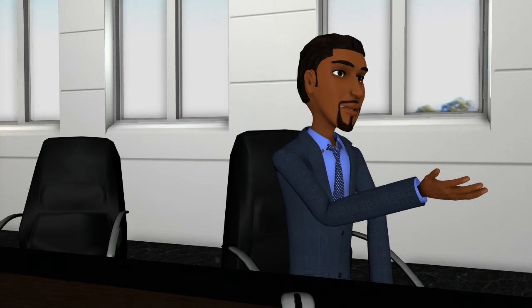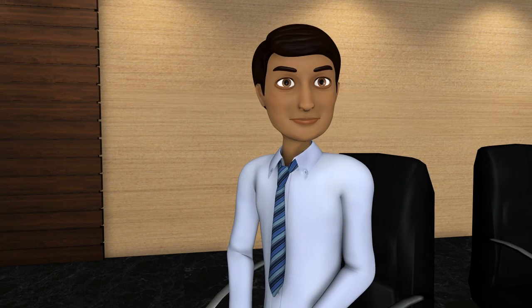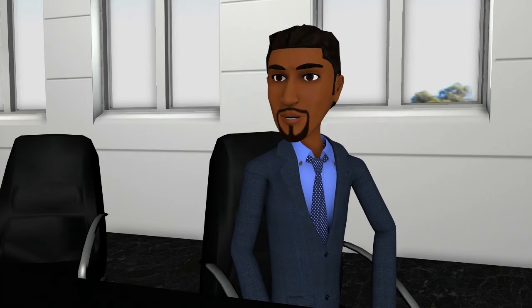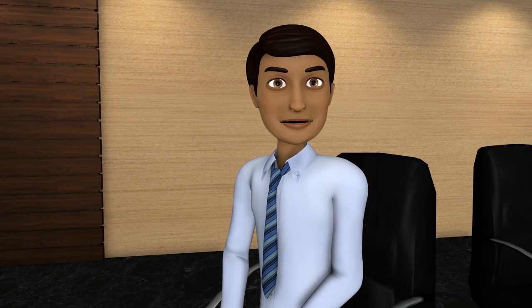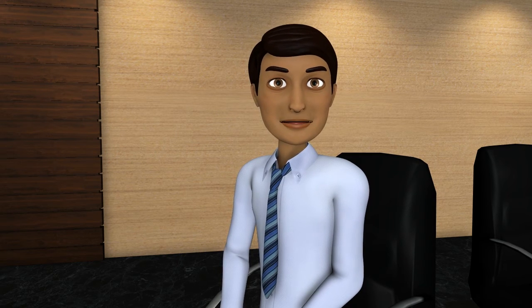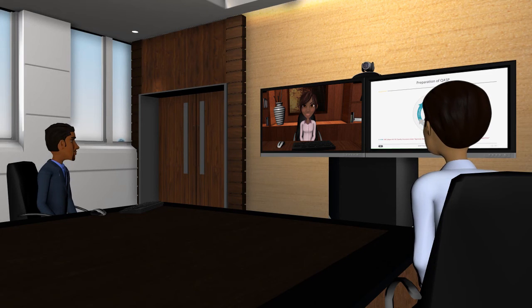Using the example Beverly gave, fuel tanker inspections — you may want to perform your own independent inspection after the contractor has performed their inspection. This will be known as a direct observation. The level of surveillance described in the plan should be commensurate with the dollar value, risk, complexity, and criticality of the acquisition. Also, keep in mind FAR Subpart 46.102 Quality Assurance states agencies shall ensure that no contract precludes the government from performing inspection. So the QASP evolves and will formalize a plan for a detailed scheme or method of government oversight and surveillance — am I correct?